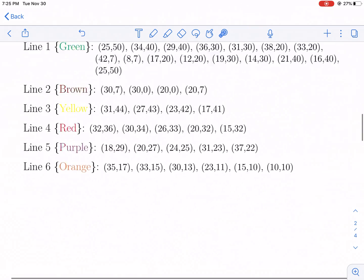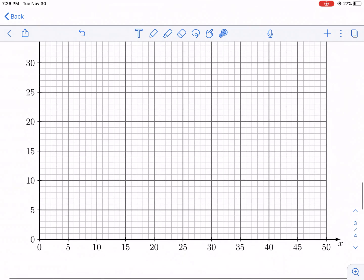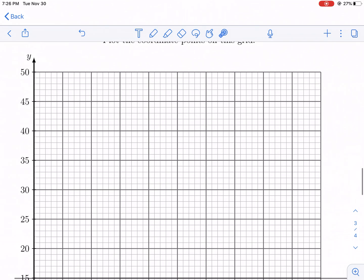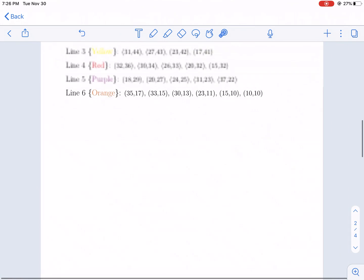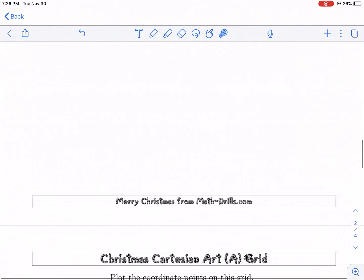So our first point is 25, 50. I'm going to go to 25 on my X coordinate right here, and then I go all the way up until I get to 50, and I'm going to make a point right there. Kind of sloppy, but it will work. All right, then we have 34, 40.